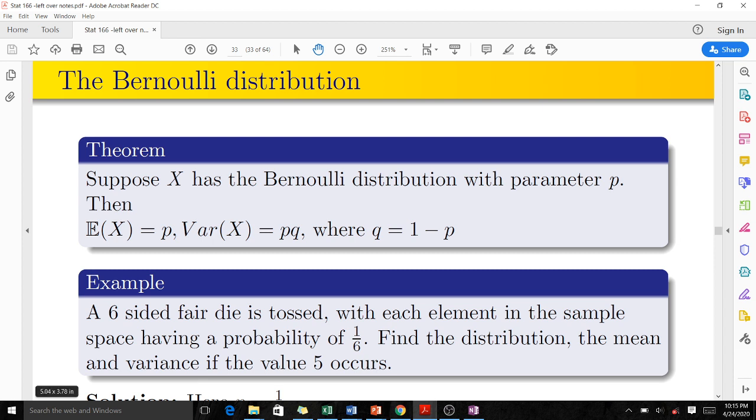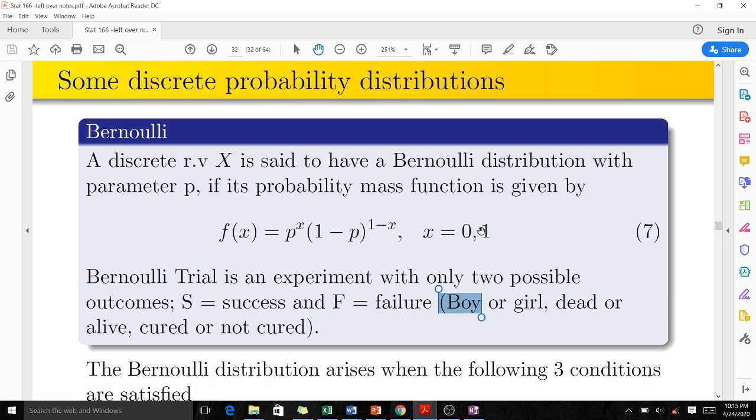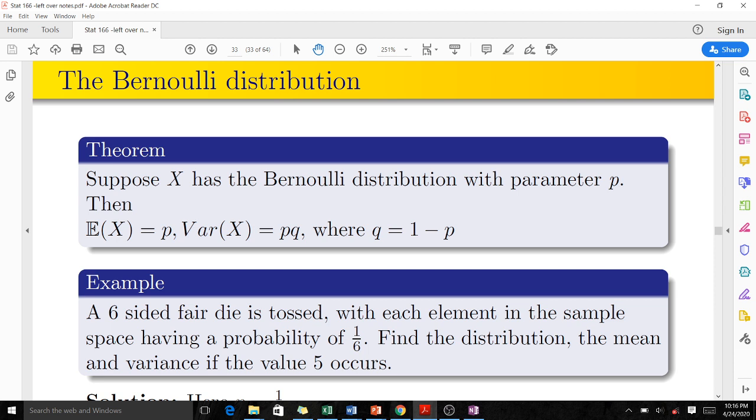There is a question here. A six-sided fair die is tossed with each element in the sample space having a probability of 1/6. Find the distribution, the mean, and variance if the value 5 occurs. You're supposed to find the distribution as we can see here, then the mean (the expected value or expectation is the same as the mean), and the variance using this formula.